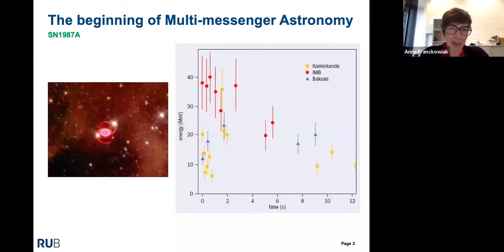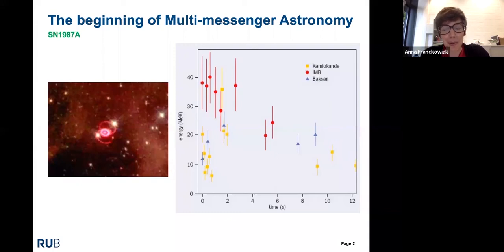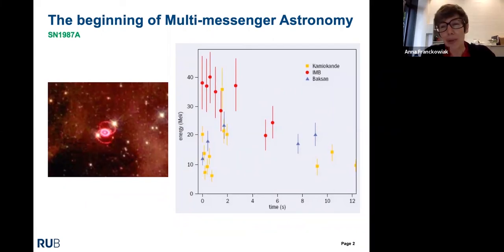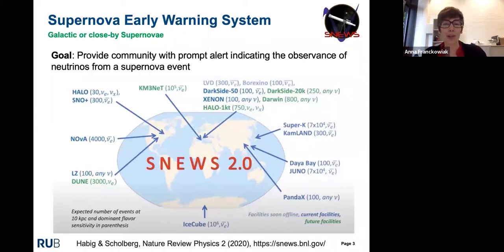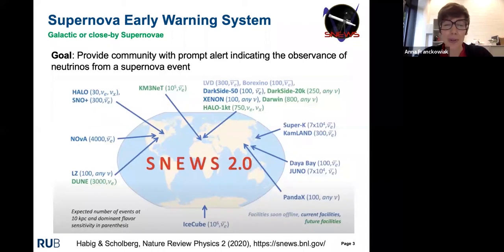First, I'd like to show you the first example of multi-messenger astronomy in 1987. A supernova exploded in the Magellanic Cloud, and for the first time we saw a neutrino signal from an object outside the solar system. This was really the beginning of multi-messenger astronomy – we had roughly 20 neutrinos from this supernova.